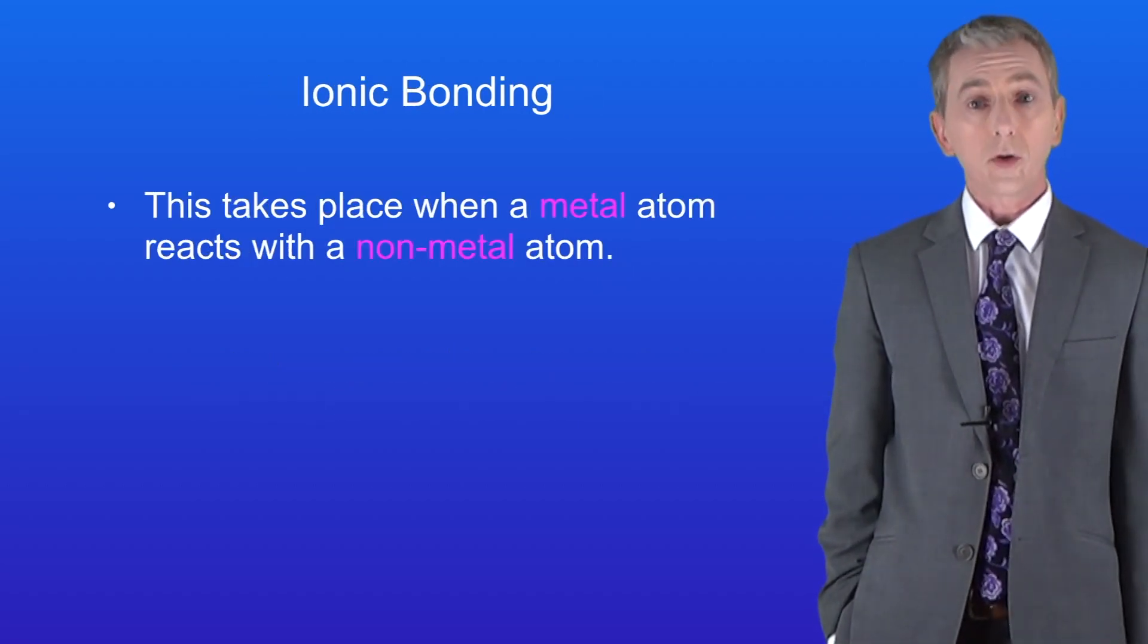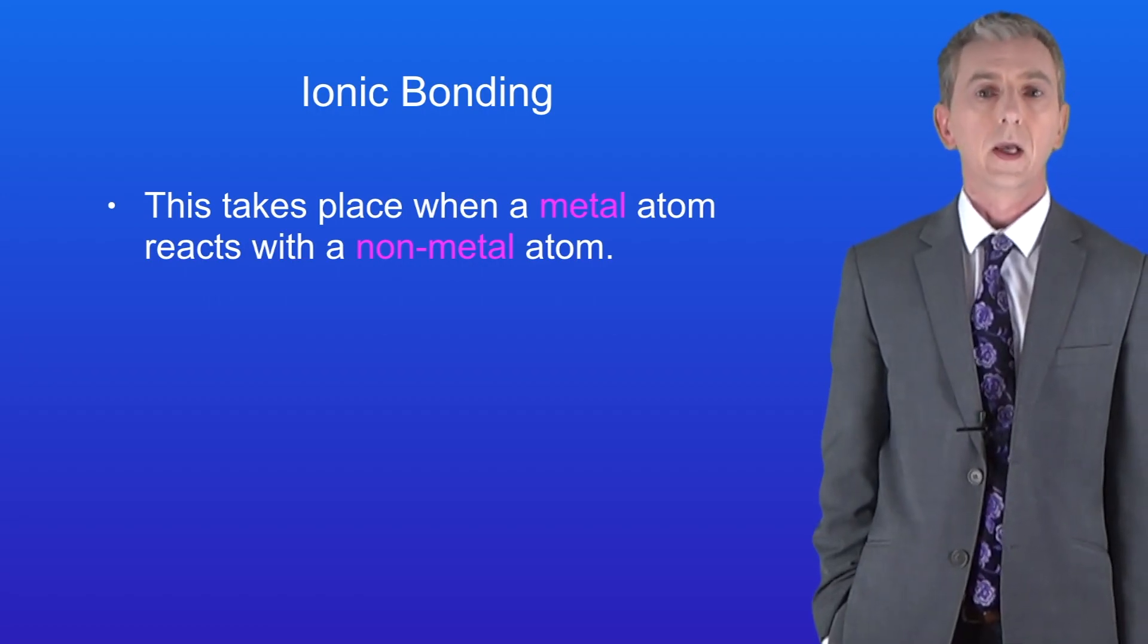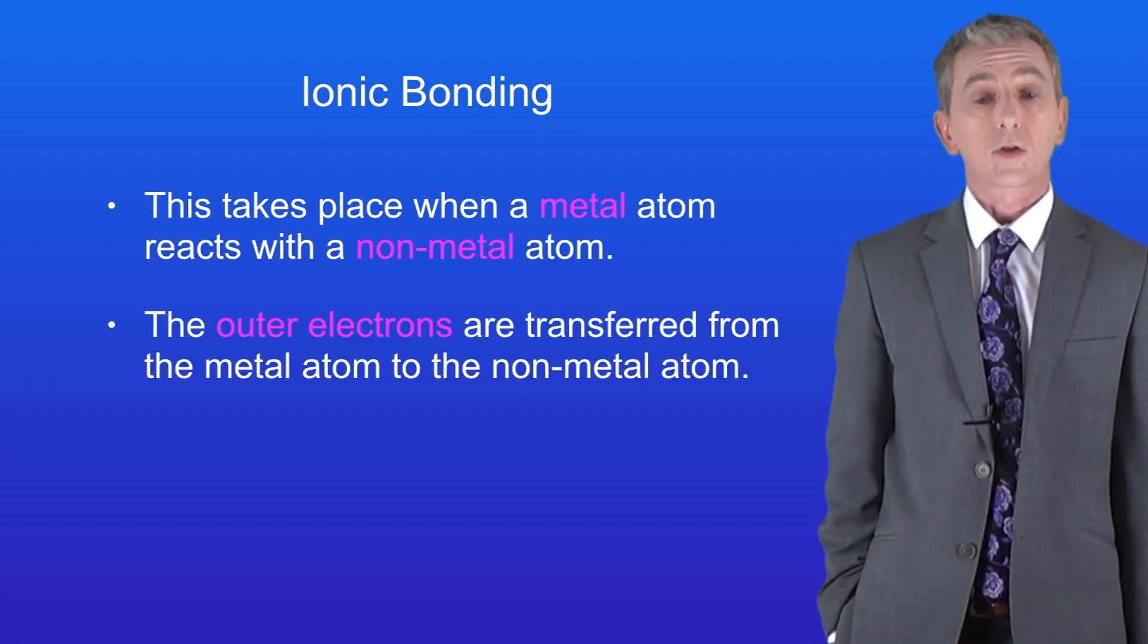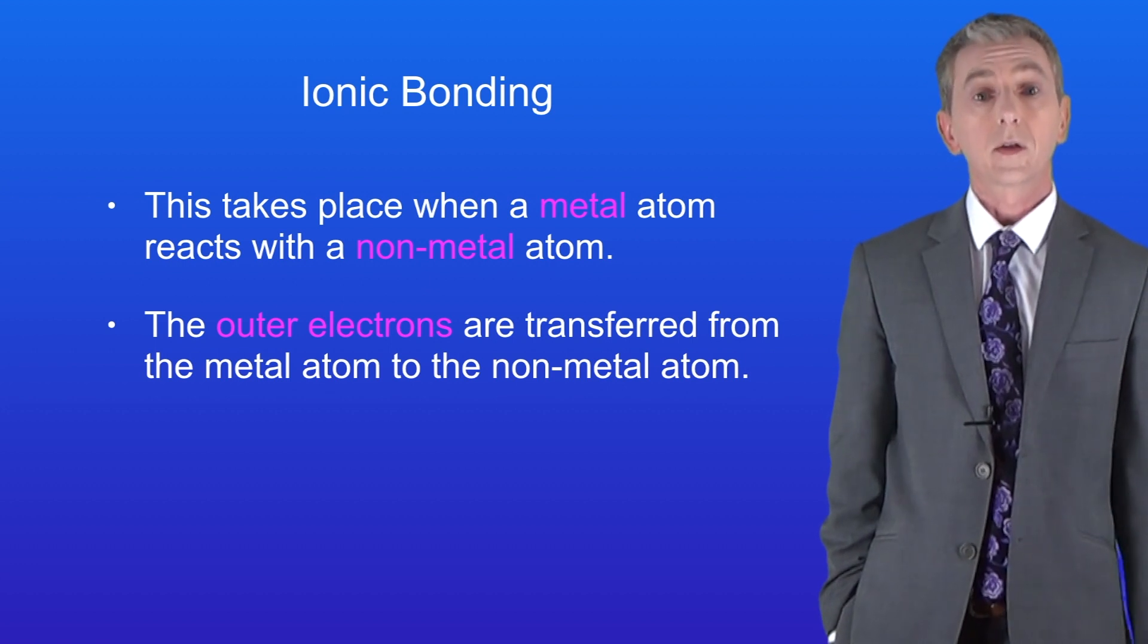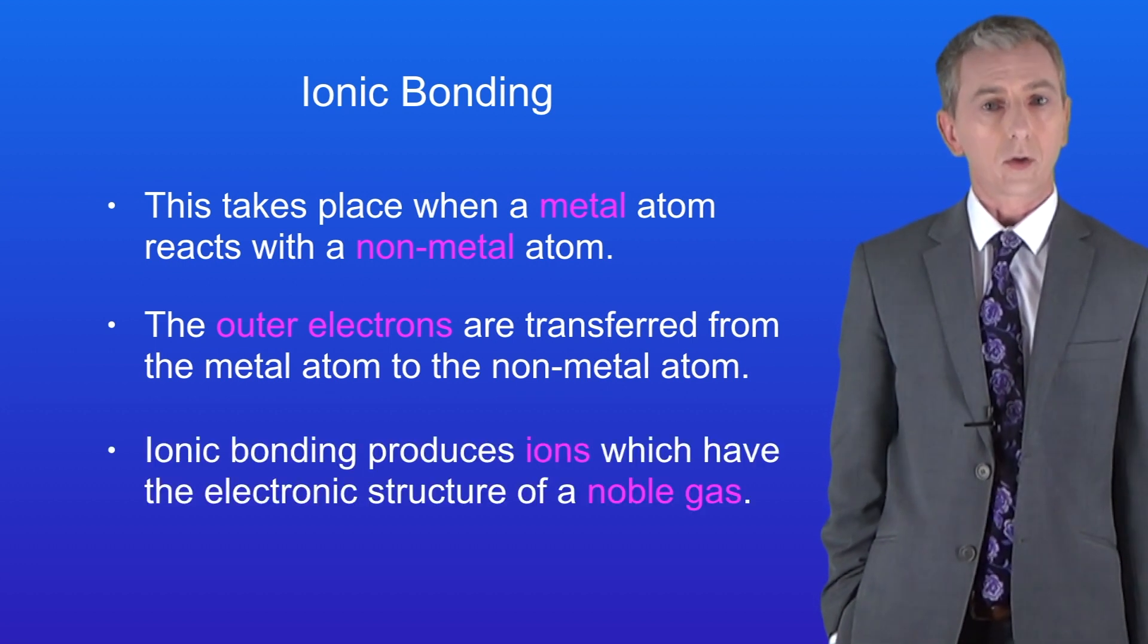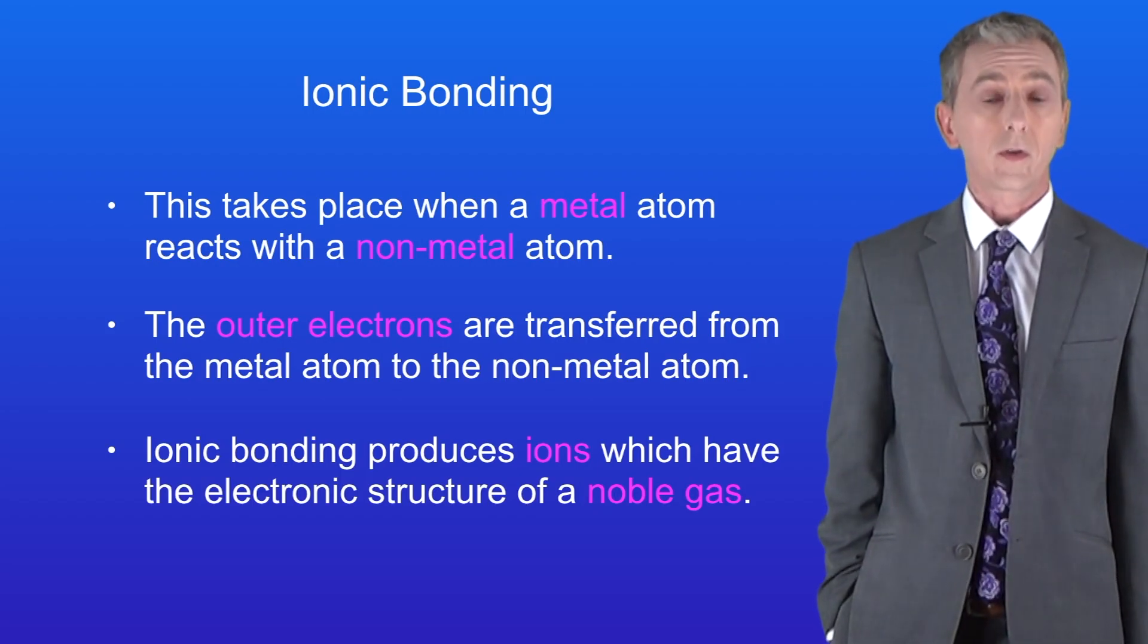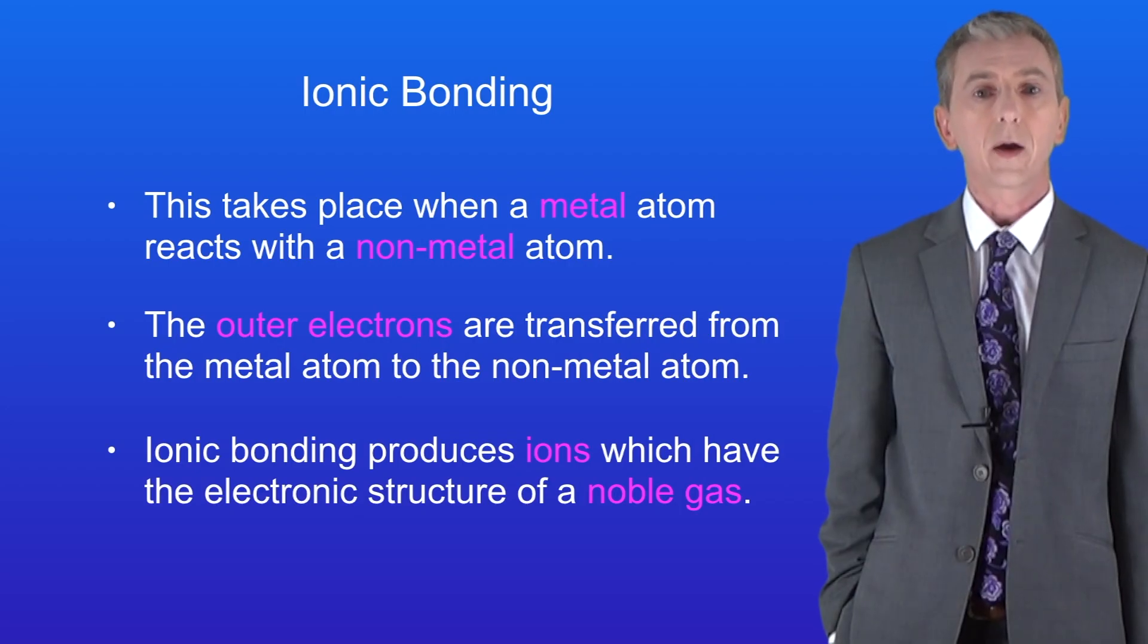We've already seen that ionic bonding happens when a metal atom reacts with a nonmetal atom. Remember that the outer electrons are transferred from the metal atom to the nonmetal atom. Ionic bonding produces ions which are atoms with a charge. Ions have the electronic structure of a noble gas, in other words a full outer energy level.